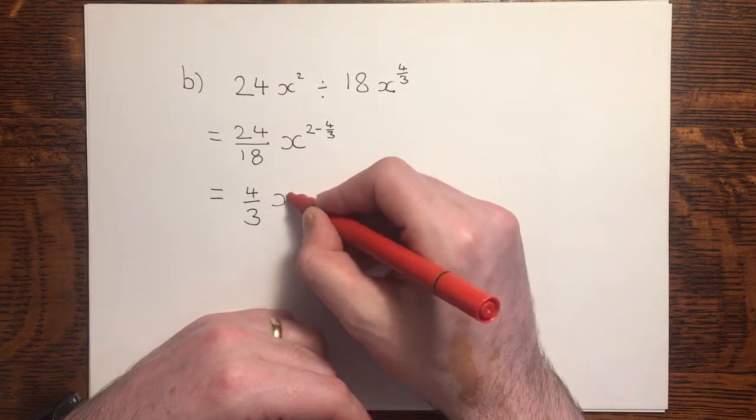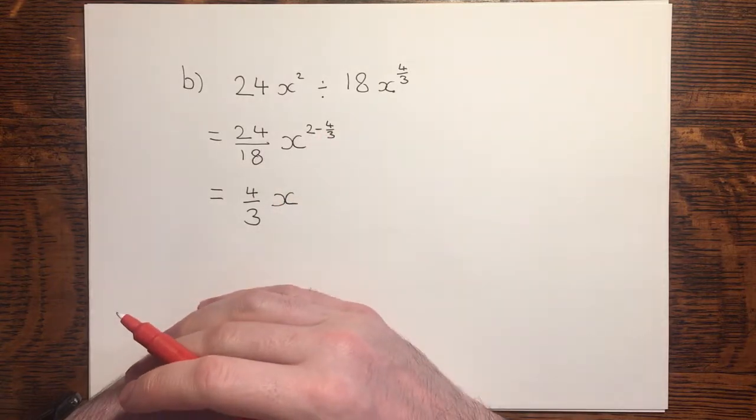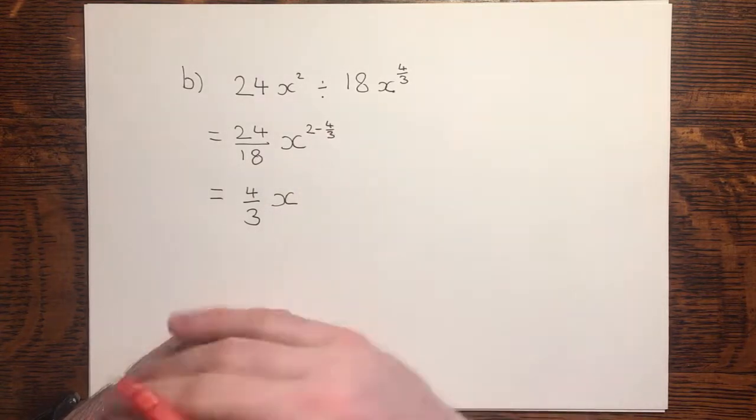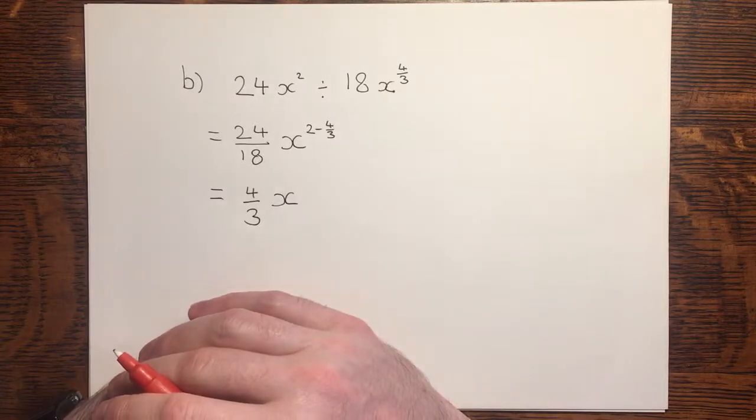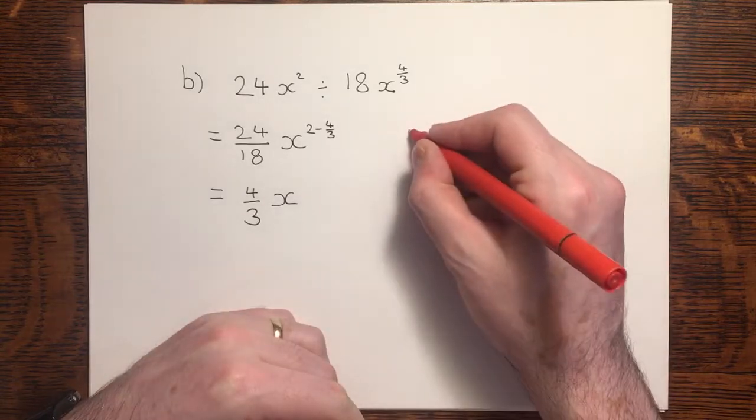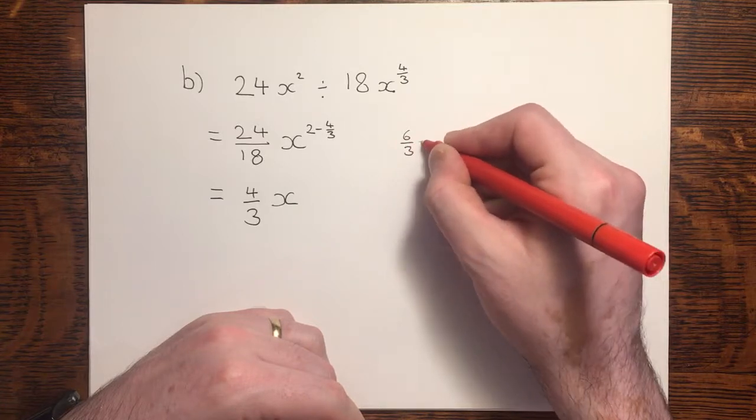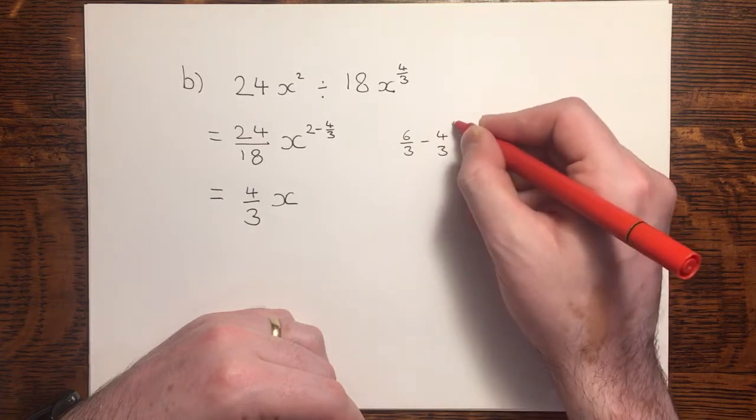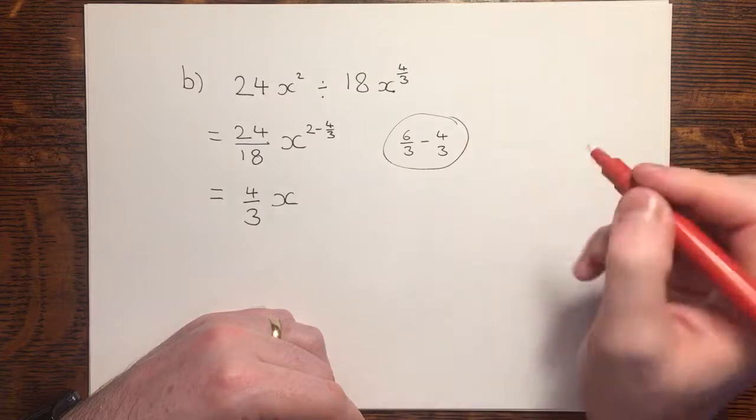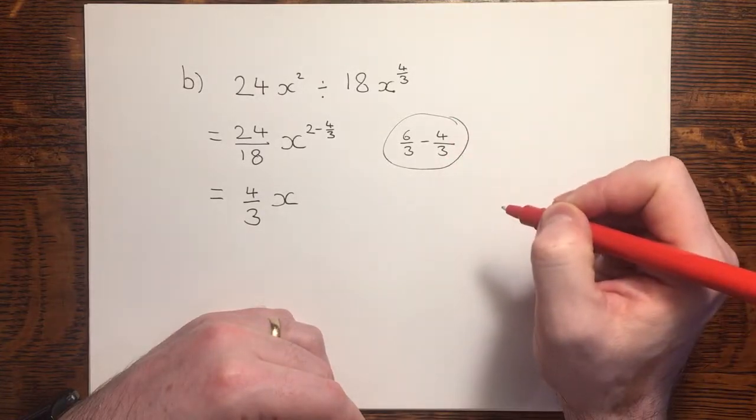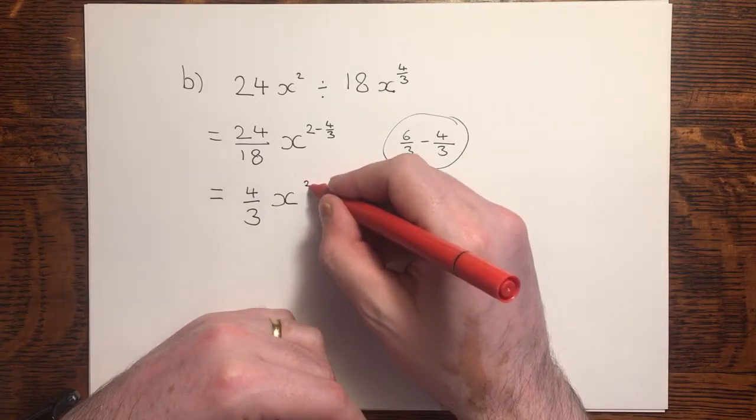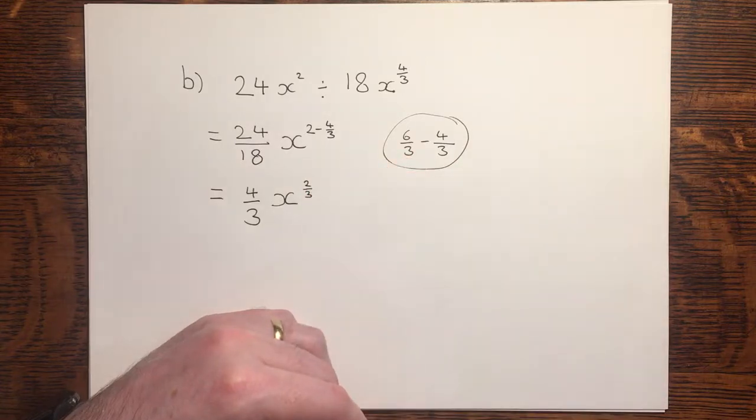Simplifying the index is simply a matter of evaluating that subtraction. 2 minus 4 over 3 is the same as 6 thirds minus 4 thirds, which would give me a total of 2 thirds remaining. And there we have the answer to question 2, part B.